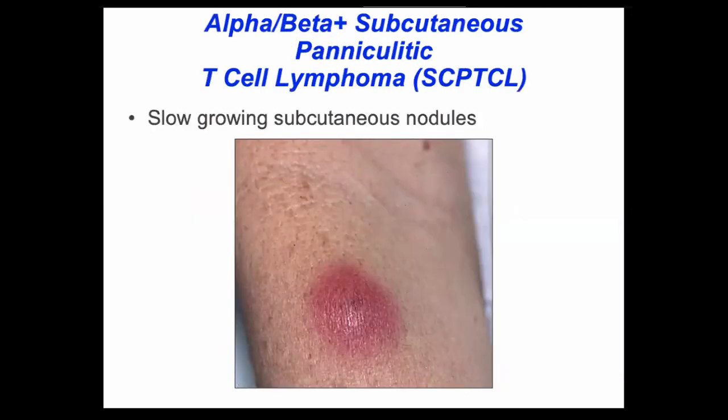This is distinguished from subcutaneous panniculitic T-cell lymphoma, the alpha-beta type. This tends to grow very slowly, is very treatable, and presents more as multiple nodules under the skin.